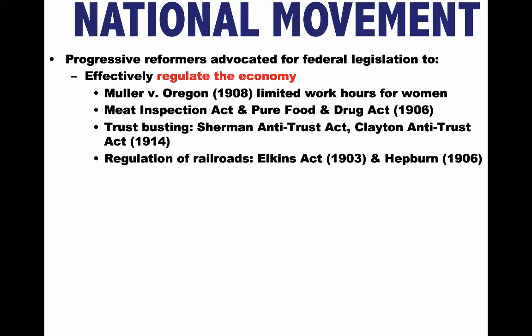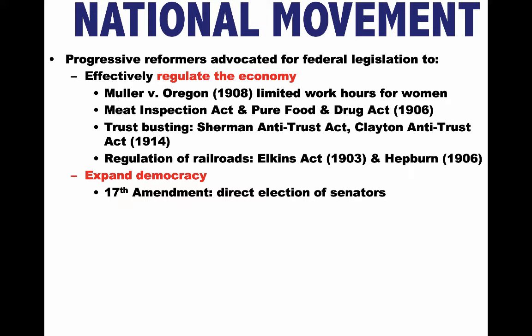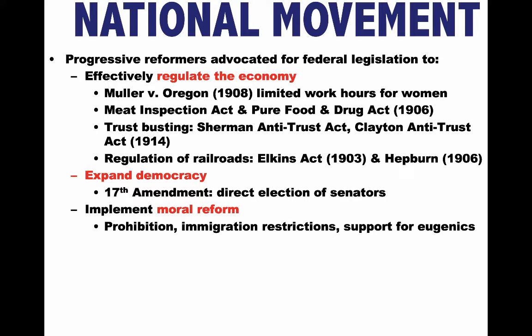An important part of the agenda of many Progressive Reformers was getting control over large corporations. Federal efforts were also made to expand democracy — the 17th Amendment provided for the direct election of senators, since previously senators were elected by state legislatures that were often under the influence of political machines. Some Progressives also focused on implementing moral reforms, which gets complicated — reforms such as prohibition, immigration restrictions, and support for eugenics were all part of some Progressive Reformers' agendas.